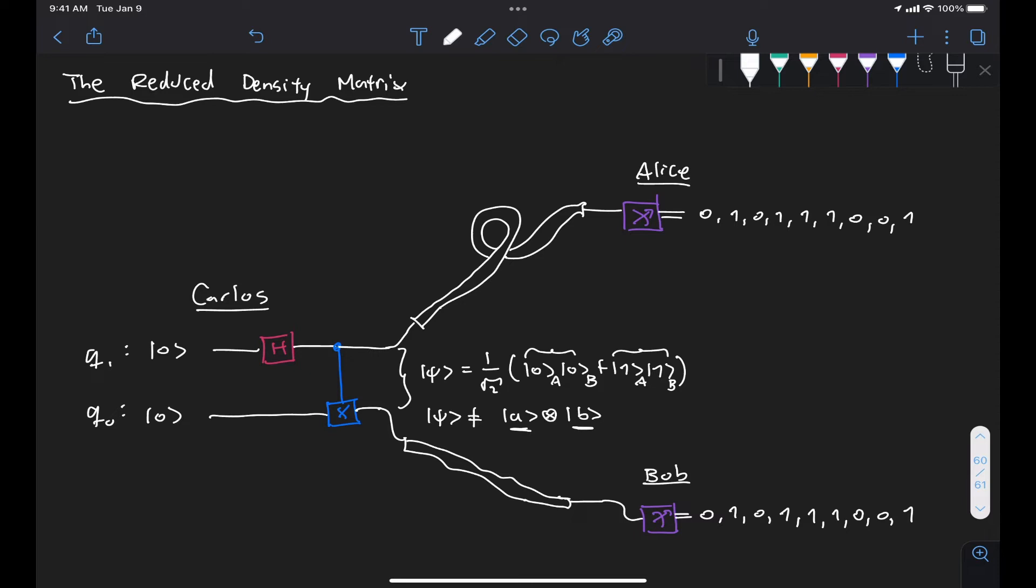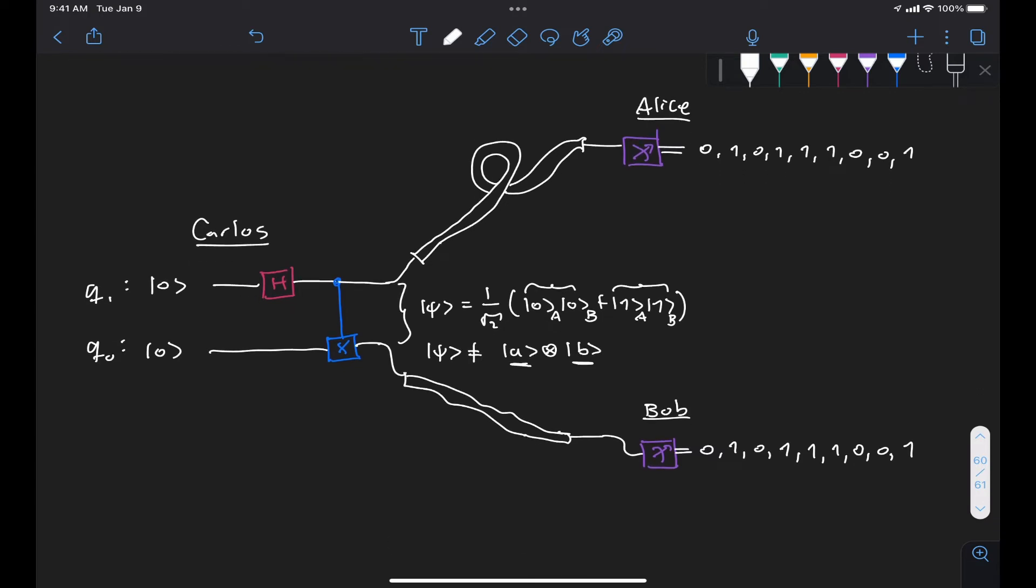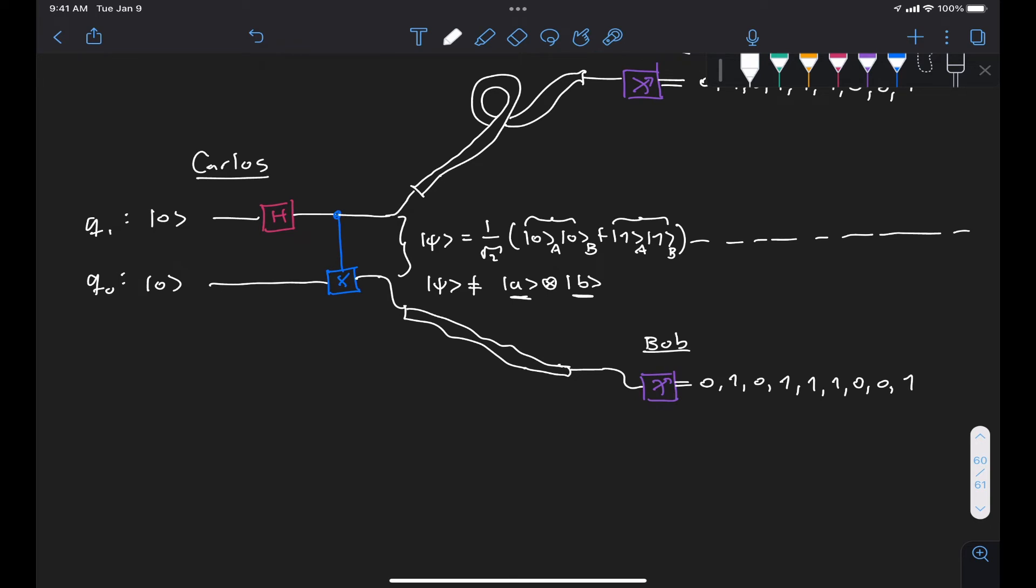But now let's picture a slightly different scenario. Let's say that Carlos is still preparing this entangled pair of qubits. But he doesn't tell Alice and Bob that he's sending them that particular state. Let's say he just calls Bob and tells him, Bob, I'm going to send you one qubit and I need you to figure out what it is. So Bob has no idea that Alice exists. All he knows is that he's receiving that one qubit.